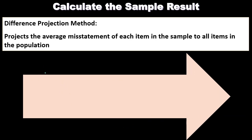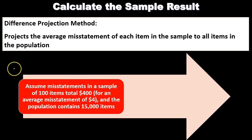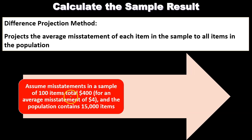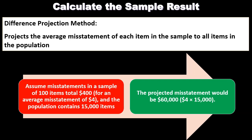The second method is the difference projection method, which projects the average misstatement per item in the sample to all items in the population. For example, assume the misstatement in a sample of 100 items totals $400, giving an average misstatement of $4 per item. If the population contains 15,000 items, the projected misstatement would be $60,000 (i.e., $4 times 15,000 items). That's the difference projection method.